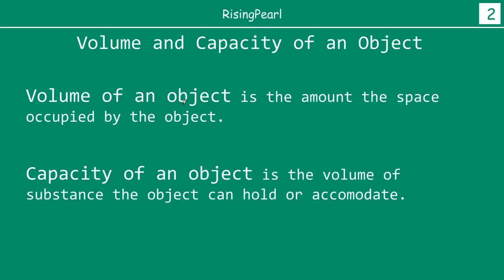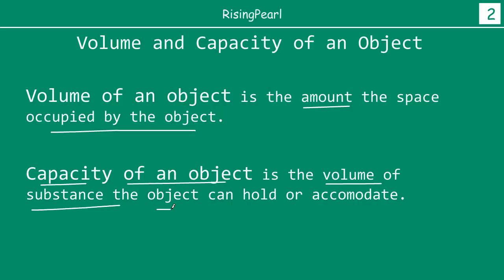So just to quickly sum up: volume of an object is the amount of space the object occupies. And the capacity of an object — you may come across this term quite a bit — is the volume of substance the object can hold or accommodate.